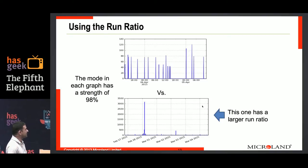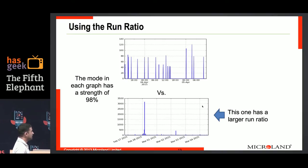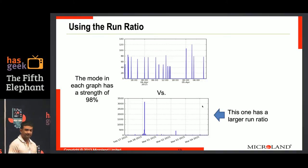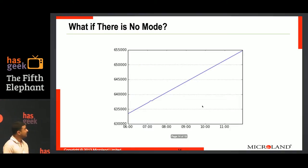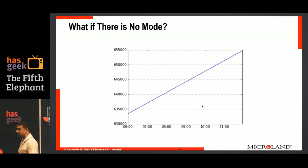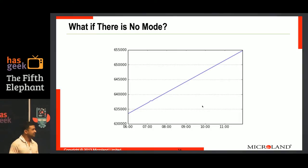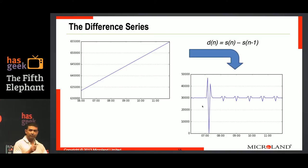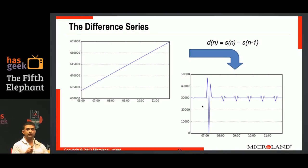Here are two graphs with a mode at around 0. These are strong modes — 98% — but the run ratio is able to distinguish between the two. A lot of the times your graphs are not going to have a mode, and then what do you do? This is not a terribly difficult problem because you can apply a difference operator — you take adjacent values and subtract the previous one from the current one, and form a different series.